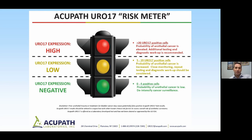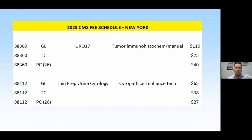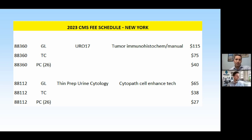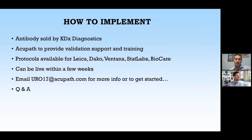Interpretation is very simple with three categories: negative, low, and high — depending on whether the pathologist sees zero to four, five to nineteen, or twenty or more stained cells. It's very easy to read for a pathologist and doesn't require significant training. Financially, urine cytology on a global basis is reimbursed at around $65 nationwide, while Uro 17 using CPT 88360 is about $115 — adding significant clinical utility plus financial value for laboratories.